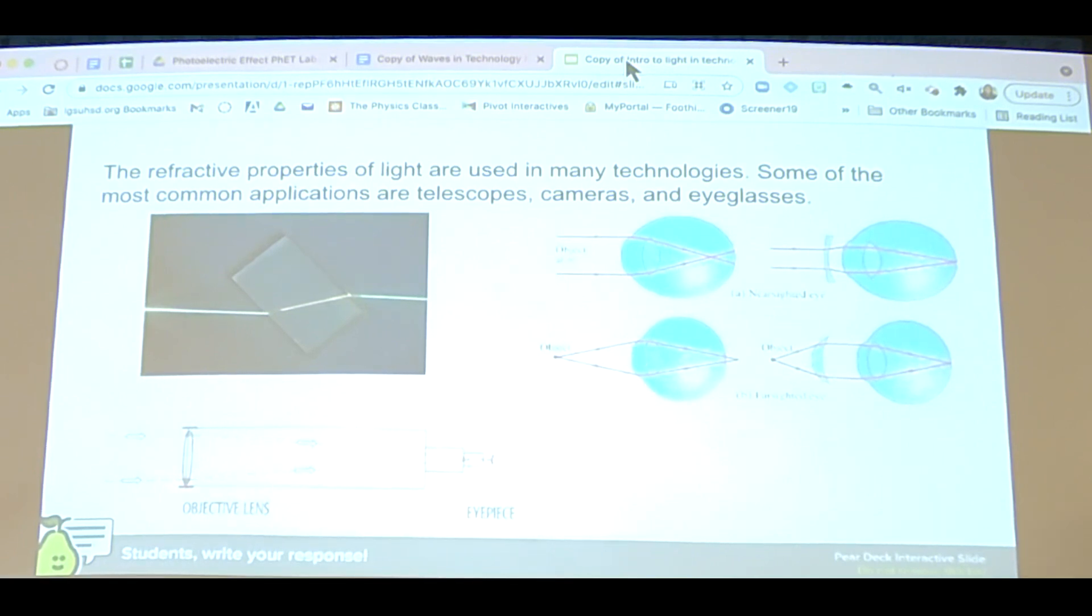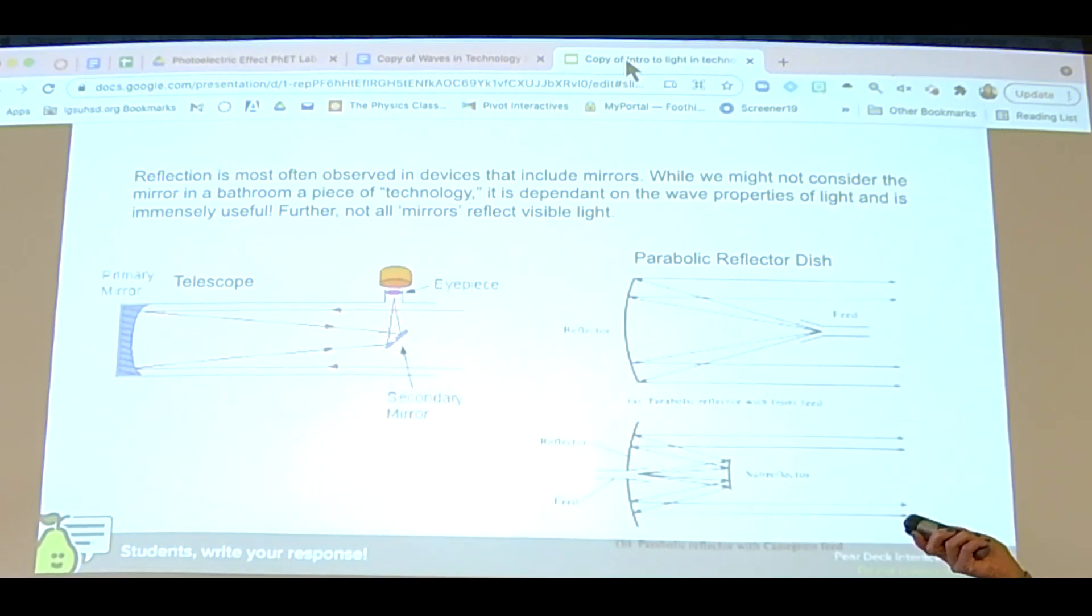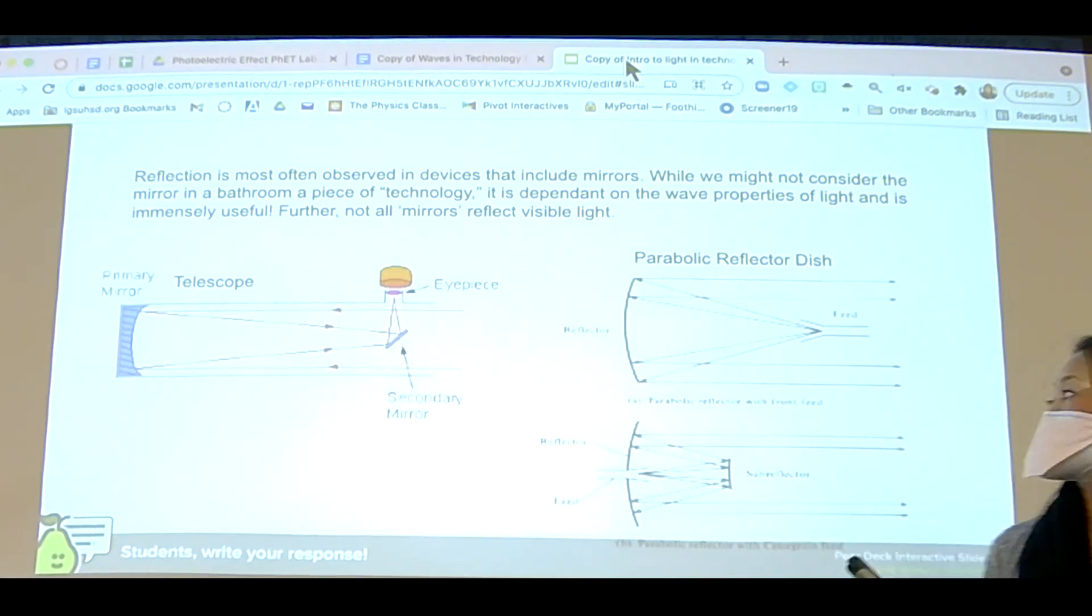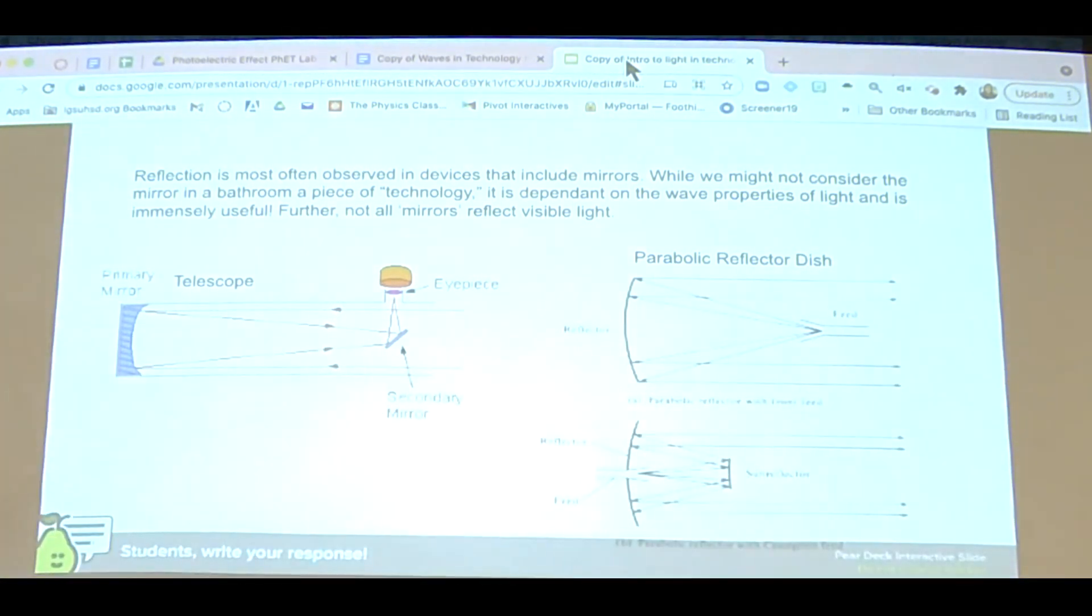When you have glasses or contacts, it uses refraction. When you have binoculars, it uses refraction. Another type of technology in lenses is reflection, which is used in telescopes. It takes the image, reflects it off the light, and you can see it through an eyepiece in a more magnified way. So reflection and refraction. I'm not just teaching you about the technology, but I'm focusing on the physics concept.